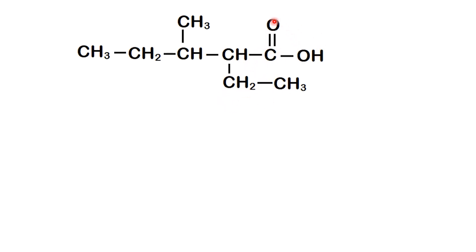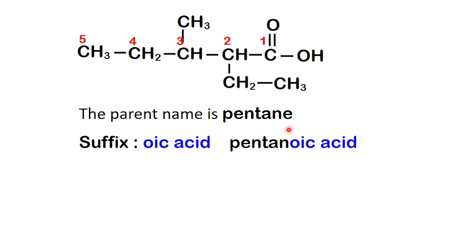The molecule has a carboxyl group, which is carbon number 1 by default. Counting along the longest chain, we have 5 carbons in total, so the parent name is pentane. Replacing the E with oic acid, it becomes pentanoic acid.